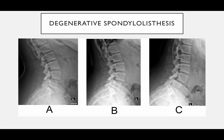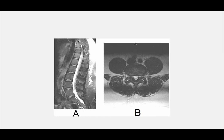Here's an example of a flexion-extension view. On the left is extension, then a mid-position view, and then a flexion view. What you're looking for is any worsening of spondylolisthesis. Comparing flexion versus extension, you can clearly see a dynamic degree of instability.